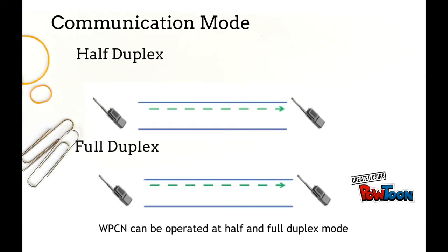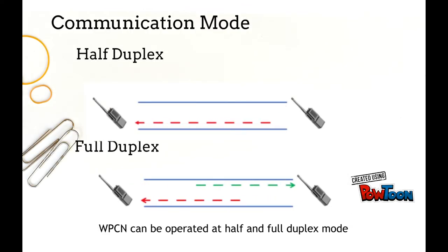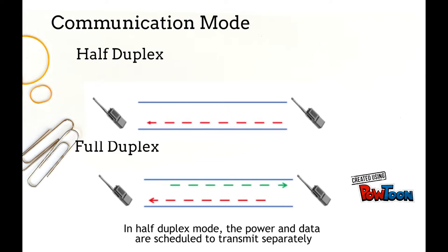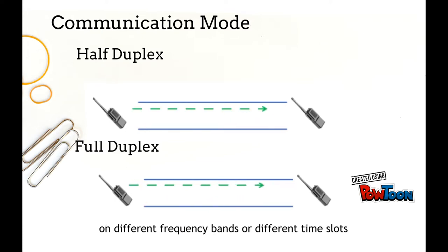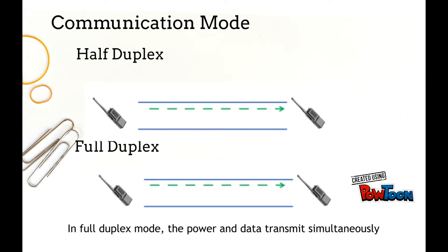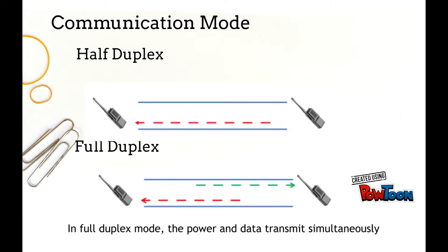WPCN can be operated in half duplex and full duplex modes. In half duplex mode, the power and data are scheduled to transmit separately on different frequency bands or different time slots. In full duplex mode, the power and data transmit simultaneously.